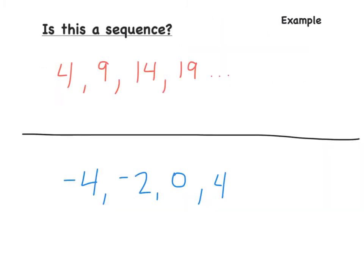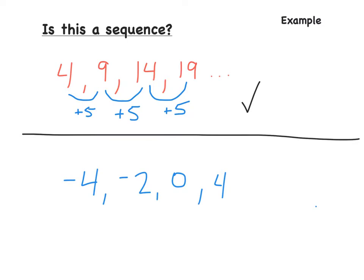Now we just have to see if these two examples are arithmetic sequences. With the first one, we have to figure out the common difference. To go from 4 to 9, you add 5; 9 to 14, add 5; 14 to 19, add 5. Yes, this is an arithmetic sequence because our common difference is plus 5 on every single term.